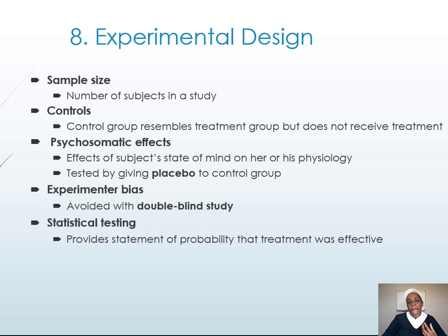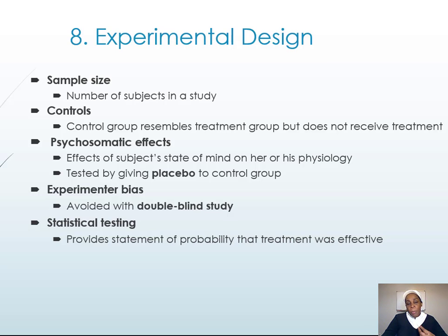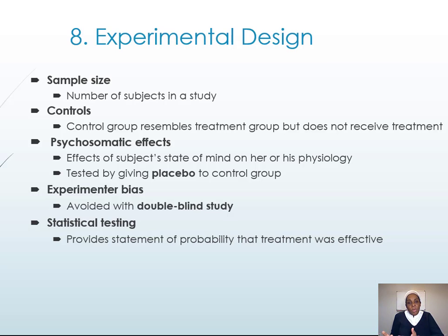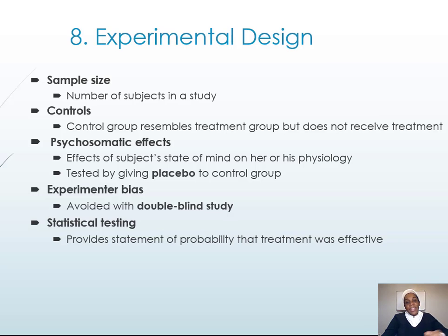Regarding sample size, you need to know how many subjects you'll have — in the egg experiment, a minimum number of eggs for each solution. You also need a control: a subject who did not receive treatment, to compare with the one who did. What about the psychosomatic effect? Someone can have a result because of psychological factors. For example, with the COVID vaccine, skeptical people may have a reaction due to their own state of mind. That's why we give the control group a placebo — a fake medicine. To avoid experimental bias, you use a double blind study where neither the doctor nor the patient knows which medicine is which.